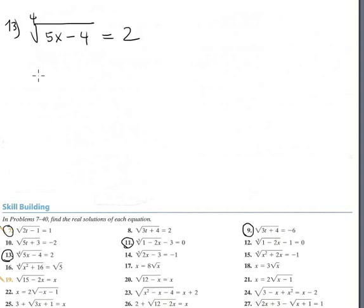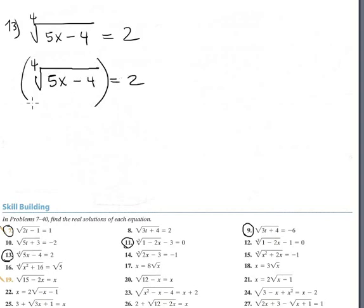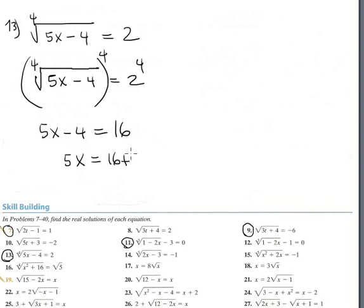Number 13 involves a 4th root — exactly the same strategy. Since the index is even, you must check. Raising both sides to the 4th power gives 5x minus 4 equals 2 to the 4th power, which is 16. So 5x equals 16 plus 4 equals 20, and dividing by 5, the answer is x equals 4.